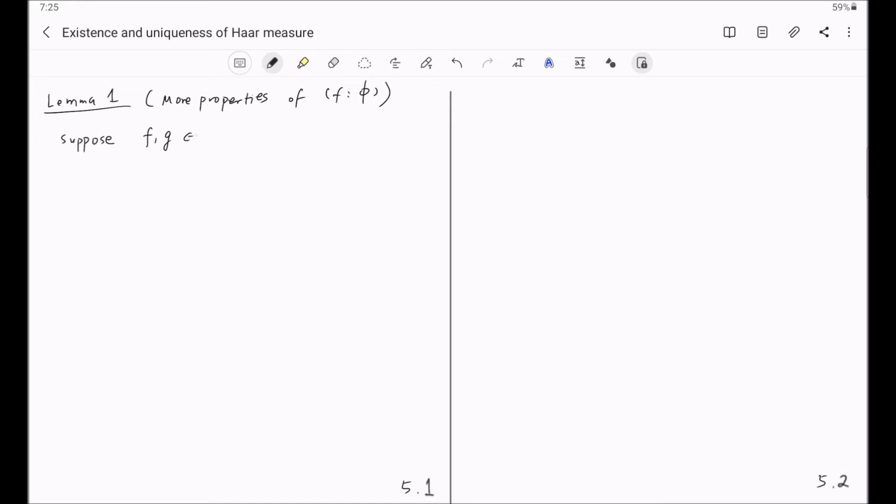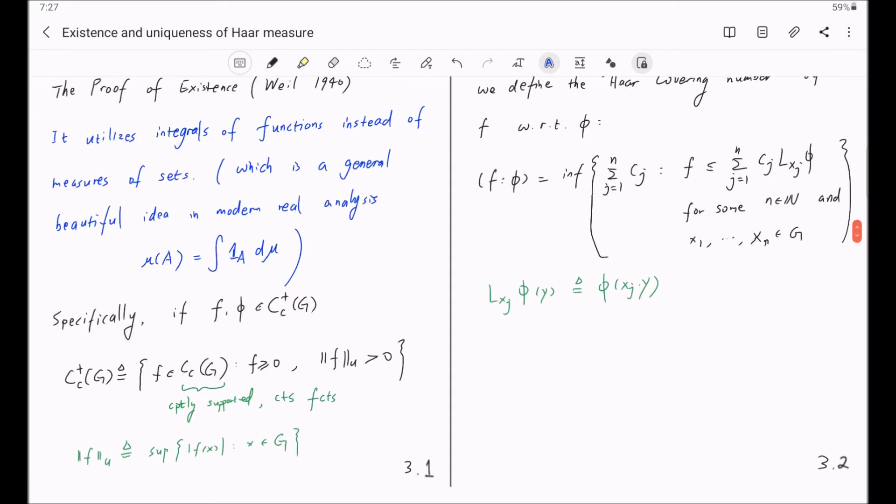Suppose F and G are in Cc non-negative G. Here this notation simply means they are in the set of functions in Cc(G), compact supported continuous functions on G that are non-negative. We do not require that they have a positive supremum. Unlike our definition for Cc plus G, where we really assume that F can attain, at some point, a positive value.